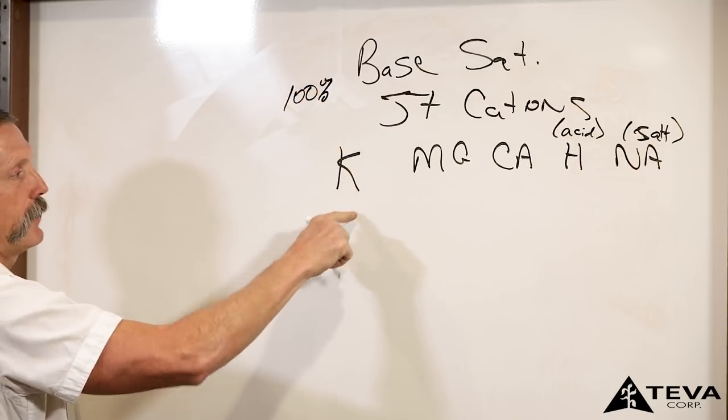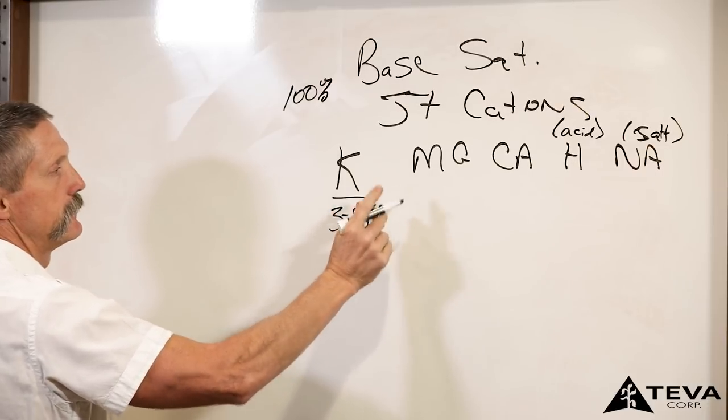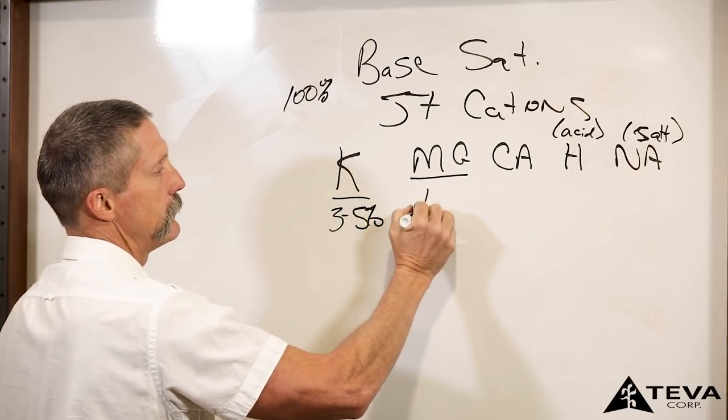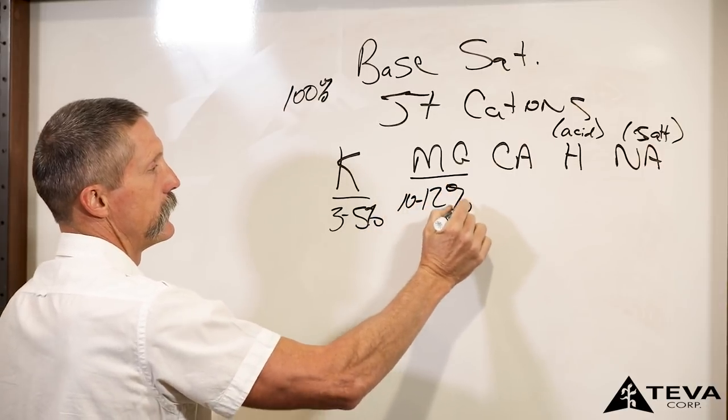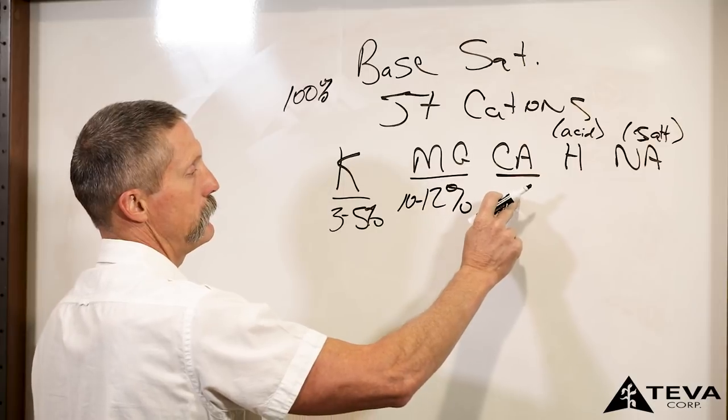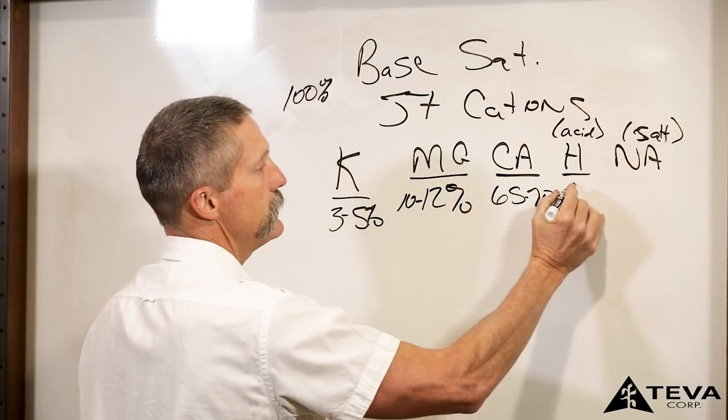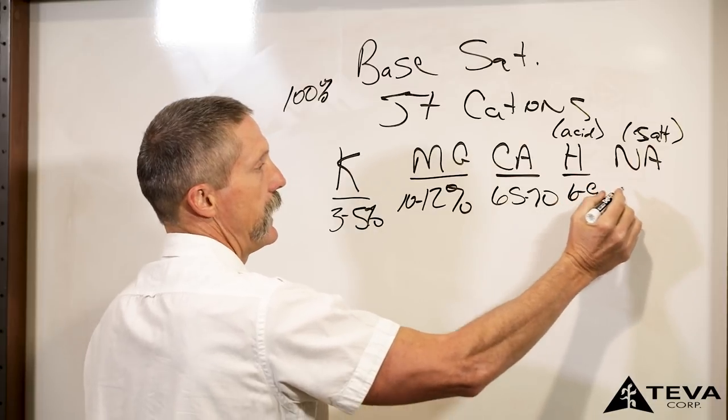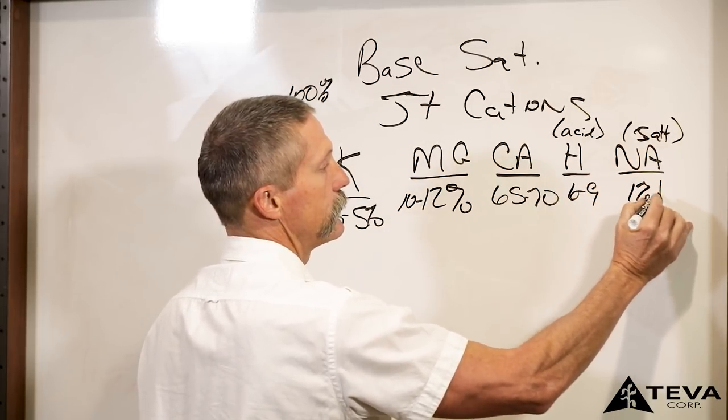Of that hundred percent, we want potash to be anywhere from three to five percent. We want the magnesium to be 10 to 12 percent. Your calcium we want it to be anywhere from 65 to 70. Hydrogen six to nine, and then your sodium one percent or less.